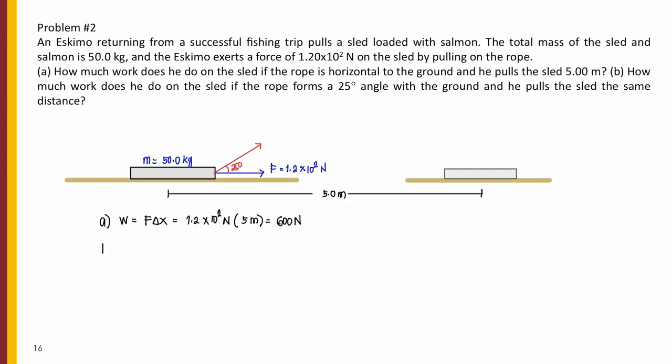So, what happens in letter B is that work is now equal to F of X delta X, wherein F of X is F cosine theta delta X, and that is equal to 1.2 times 10 to the power of 2 newtons times cosine of the angle 25 degrees times 5 meters. By the way, this is not newtons for letter A, that is joules. That's newton meter or that's 600 joules.